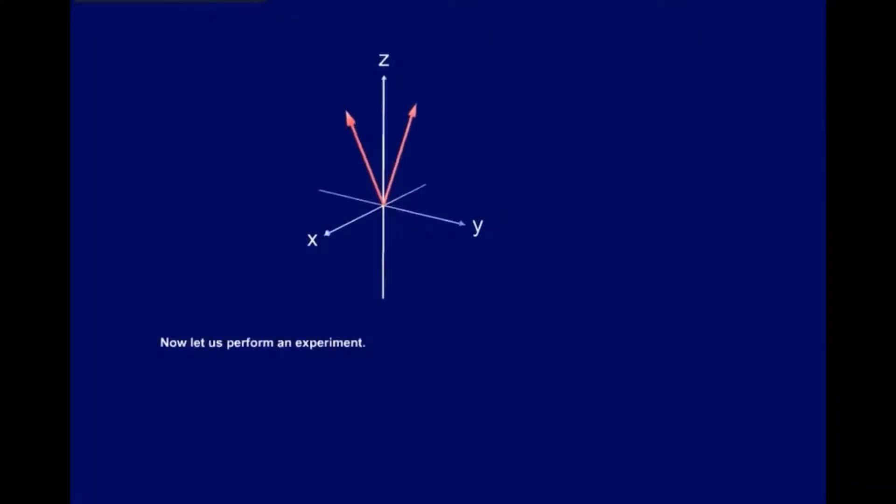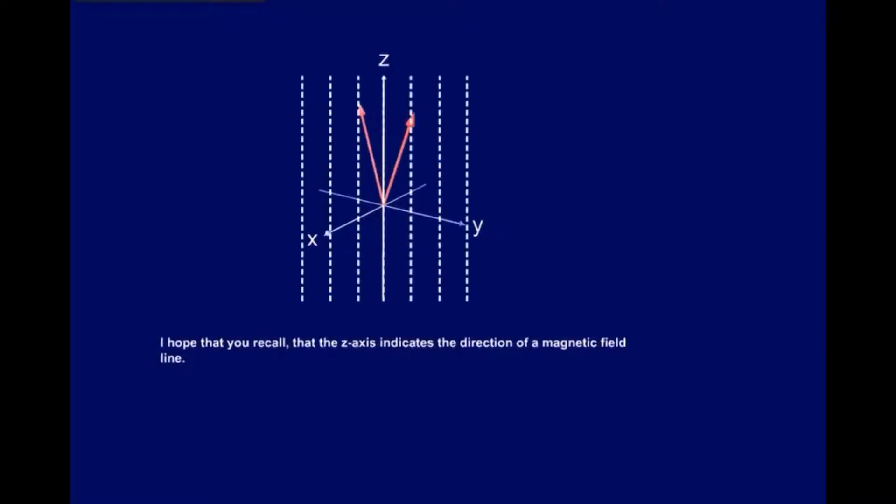Now let us perform an experiment. Here you can see two protons precessing around the z-axis. I hope that you can recall that the z-axis indicates the direction of a magnetic field line.